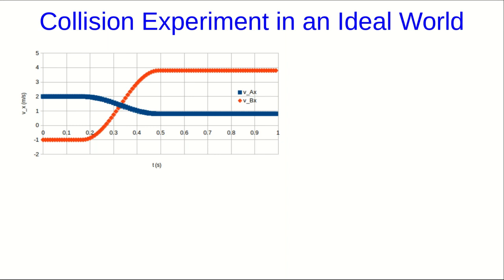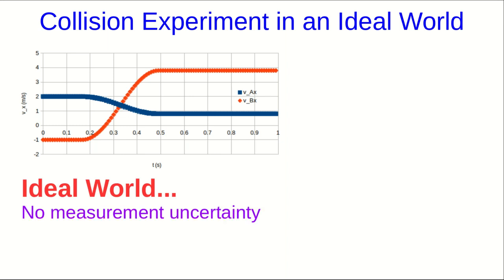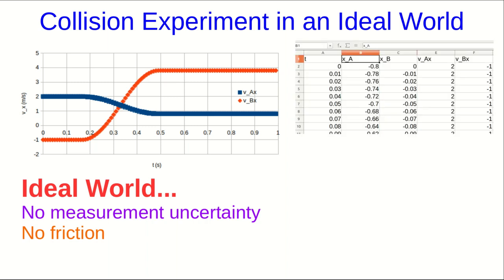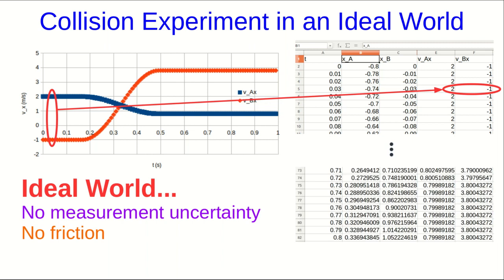So here's what a collision experiment would look like in an ideal world. And what I mean by an ideal world is one where there's no measurement uncertainty. For some reason, we can do infinitely precise measurements and there's no friction. So what we have here is our two carts and they're going at constant velocity before the collision. The collision occurs and then they're going at two new constant velocities after the collision. And analyzing this would be really easy. We could just read the initial velocities off from any time before the collision, read the final velocities off from any time after, and then check momentum conservation.